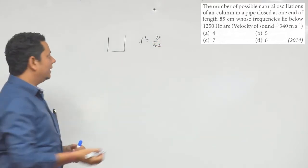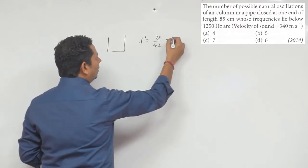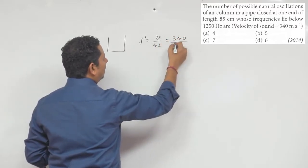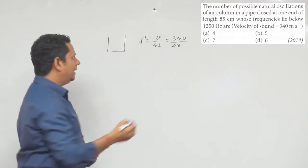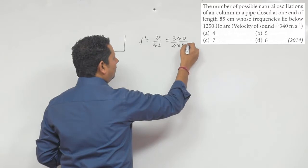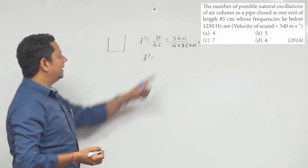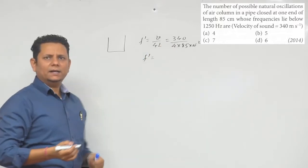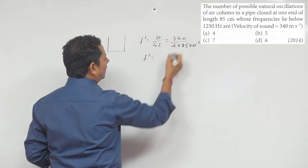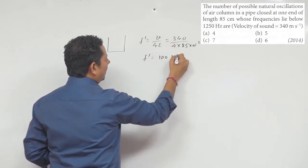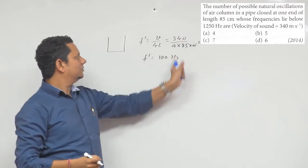Now, when we talk about this, the fundamental frequency is 340 divided by 4 multiplied by L. L here is 85 cm, which is 10 to the power minus 2, which is the fundamental frequency. When we multiply it, the value will be 100 Hz because 85 into 4 will be 340, so it will be 100 Hz.